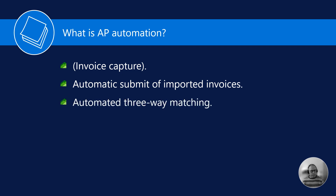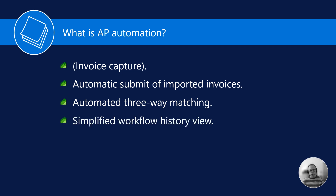In addition, it is possible to automate three-way matching as a validation step before the invoice is submitted for approval. This way we can ensure that the invoice matches the purchase order and product received before the approver is asked to approve. This step is optional. The AP clerk is able to query the workflow history for an invoice through a simplified view, making it a lot easier to quickly know where the invoice is in the process.